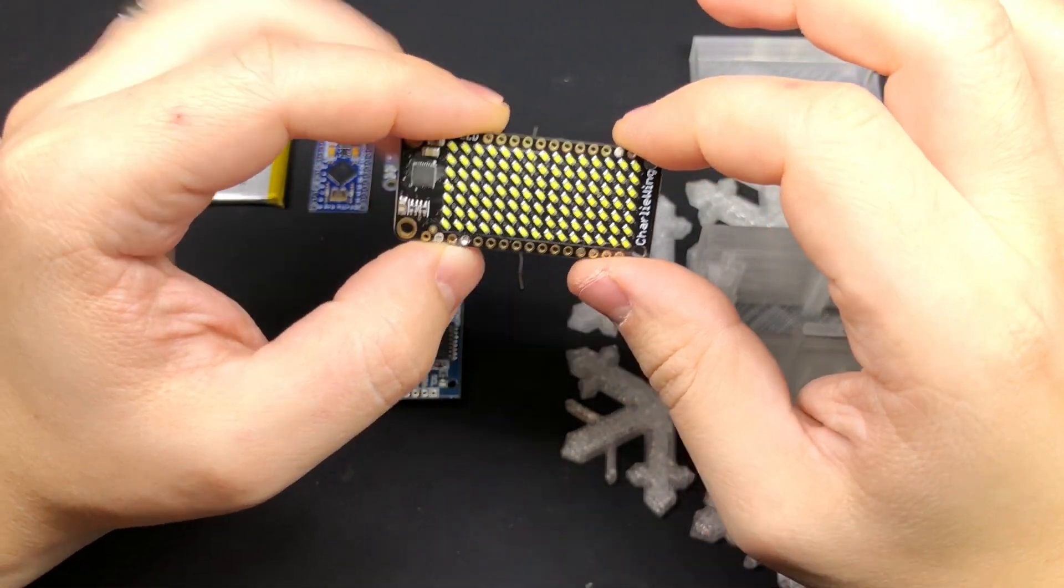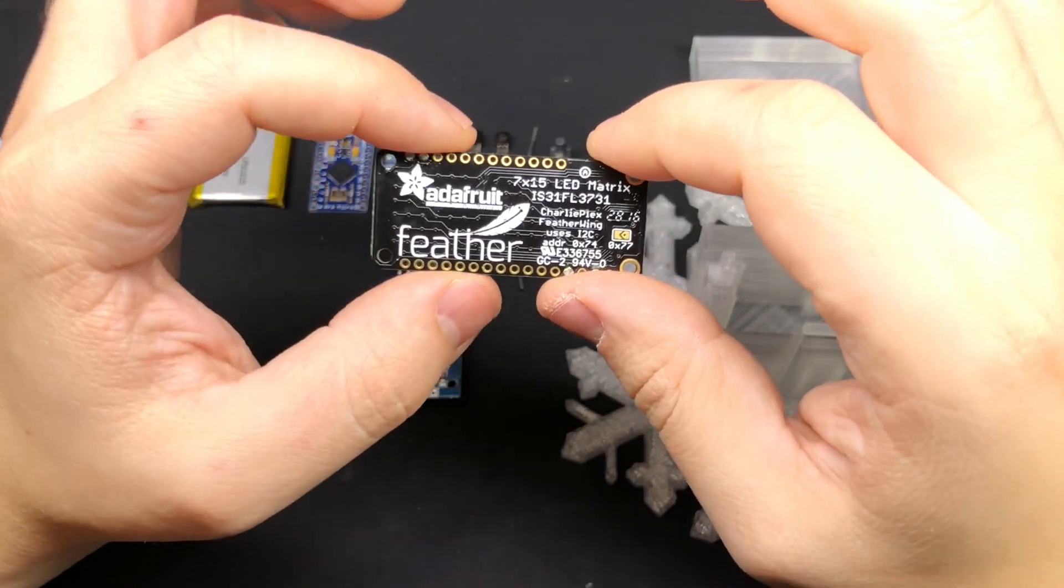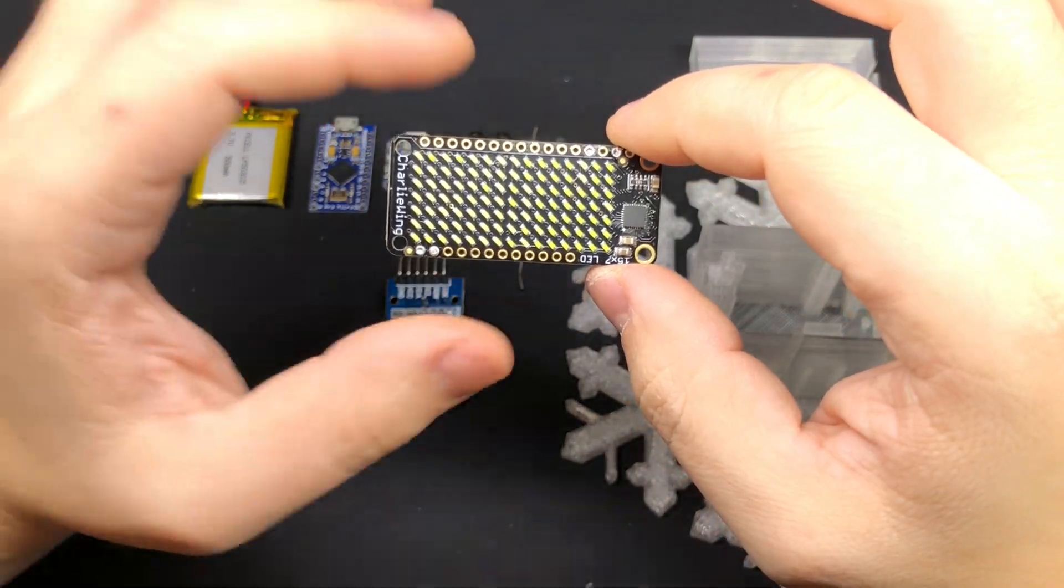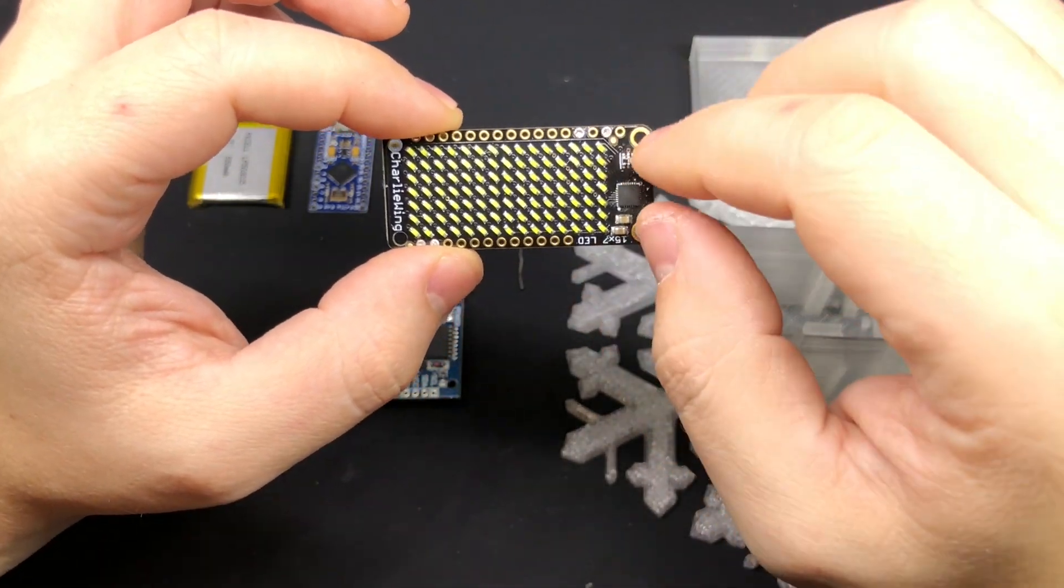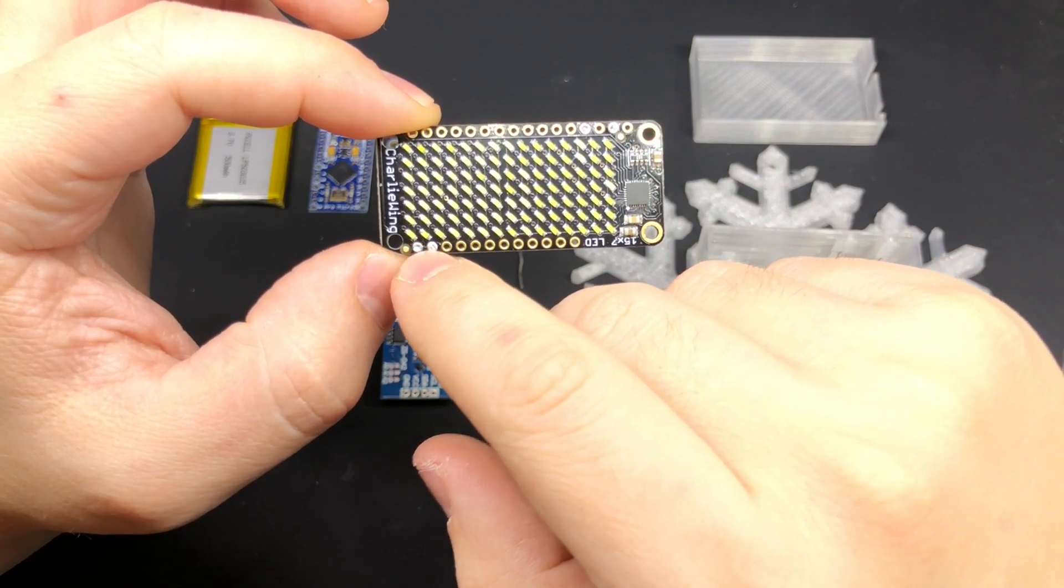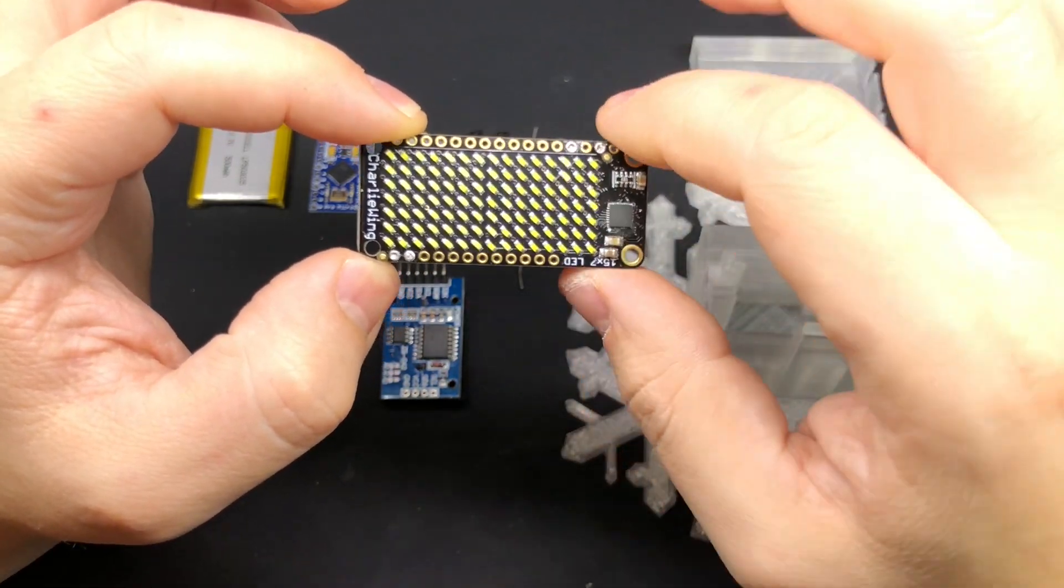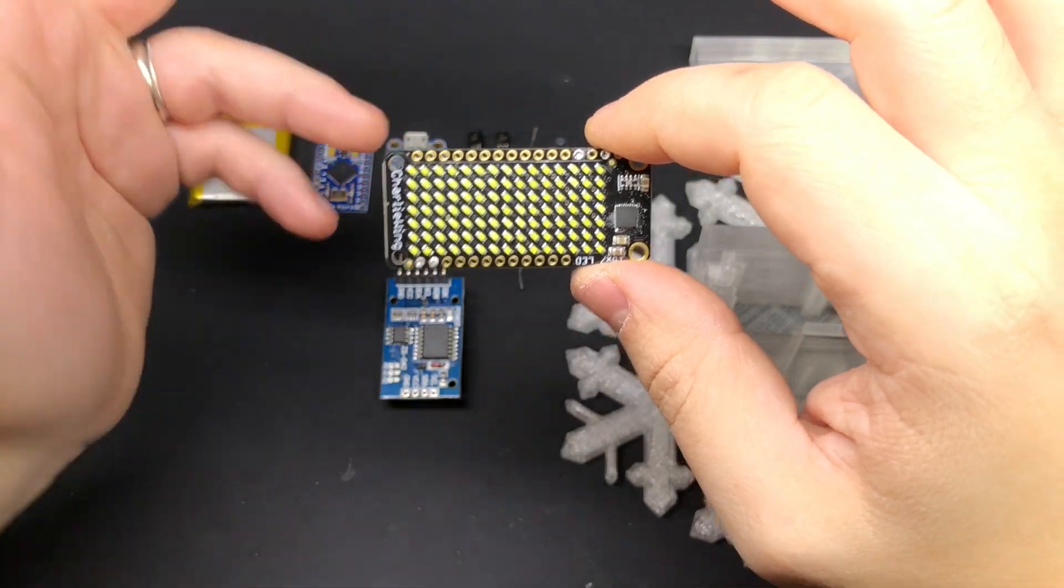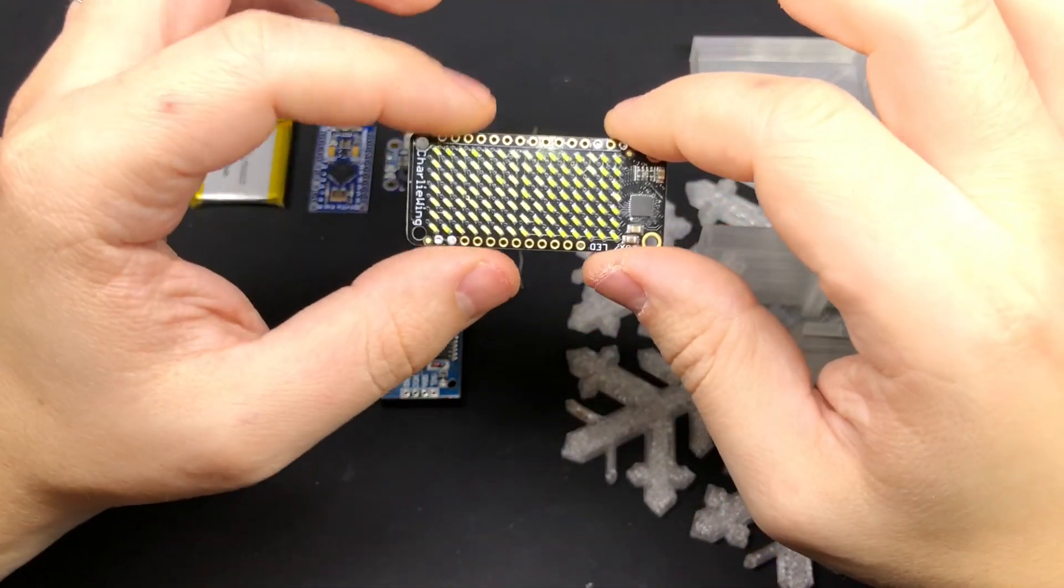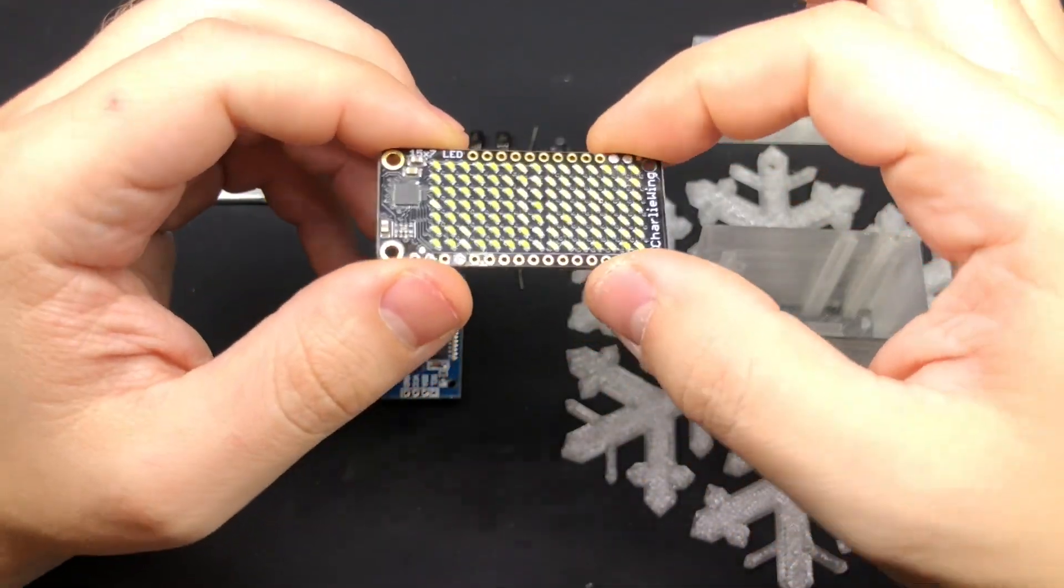I've got a Charlie wing also from Adafruit. This is meant to be used with their feather line of products. You don't have to use it with their boards, but it's basically just a 15 by 7 grid of surface mount LEDs. You can connect to it with just these two pins down here and then power it with these two pins up here. They've even got a library for drawing things to it like text and lines and shapes and things like that. Perfect for a project like this. You can get them in different colors too.